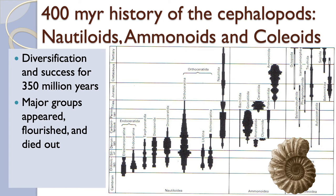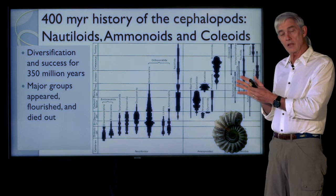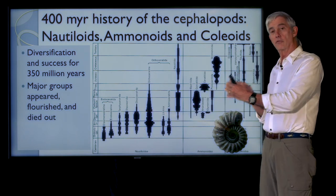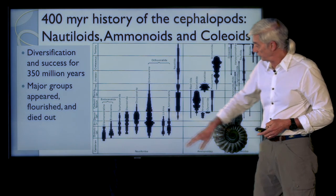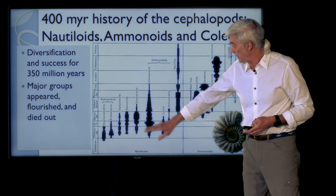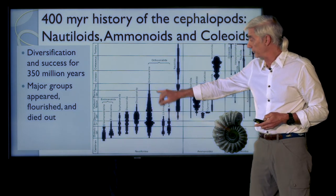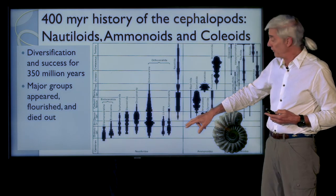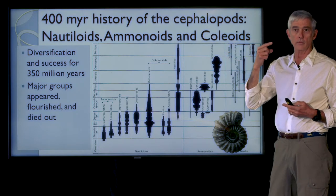Looking back at the history of these organisms in the ocean, these figures show the diversity of different lineages within the nautiloids and the ammonoids. The width of the black lines charts the diversity within each of these different taxa. Starting down in the Cambrian, you can see an explosion of diversity moving through time. The nautiloids came in first, but then many lineages start dying out. The only nautiloid line that survived for a very long period of time is the nautilida themselves, coming up to the present with that one genus, nautilus.